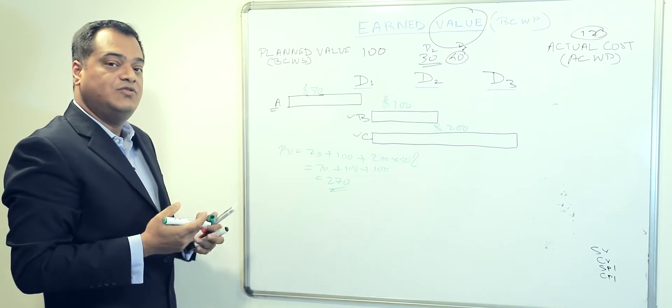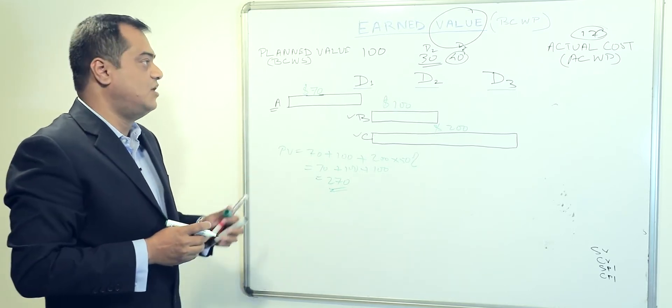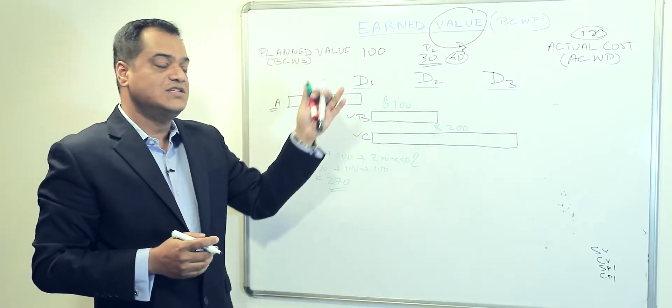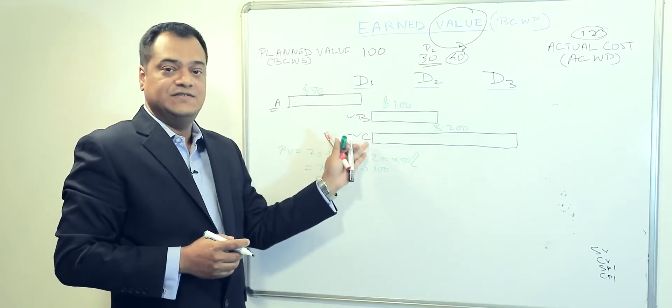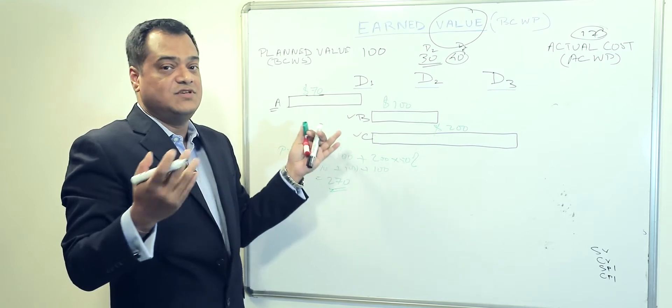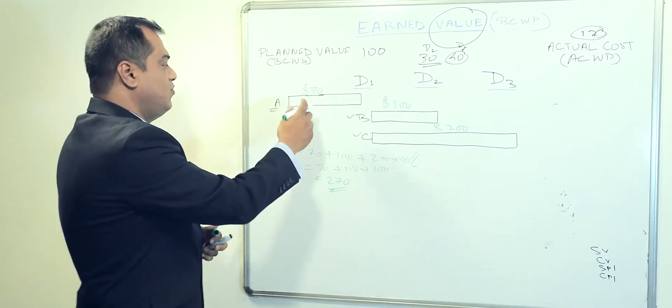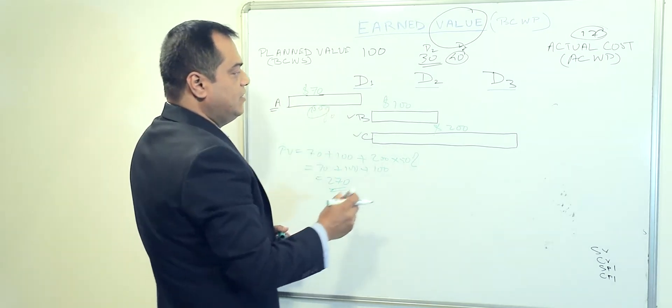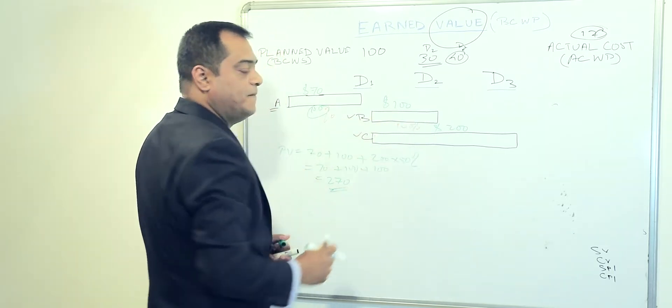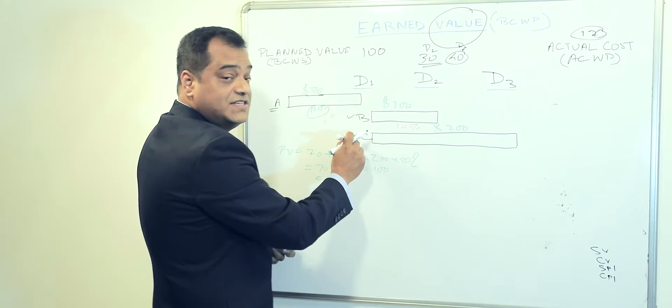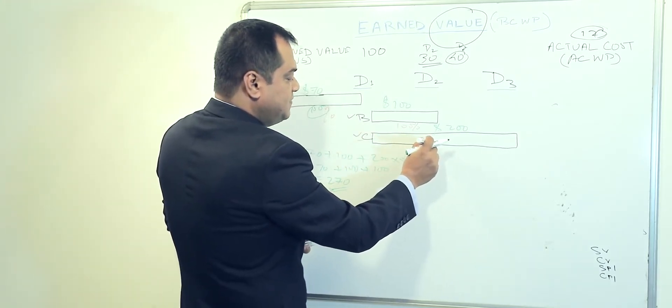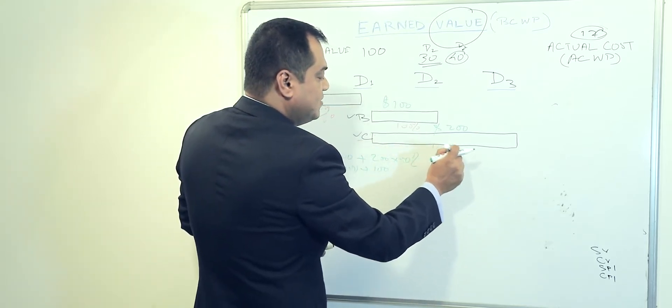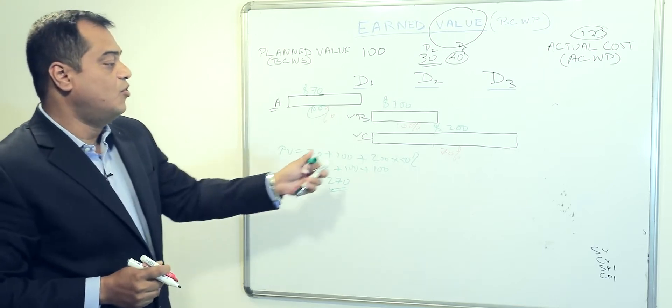Now how do we know the efficiencies or the earned value of the business? To understand the value of the business, we need to know the output from these activities, either output or in terms of percentage. Say for example, end of day one you have done 100 percent. End of day two, this is also 100 percent done. And now for activity C, you're supposed to do 50 percent as per the plan, but you have actually done 70 percent. That means you have done 20 percent more on activity C.